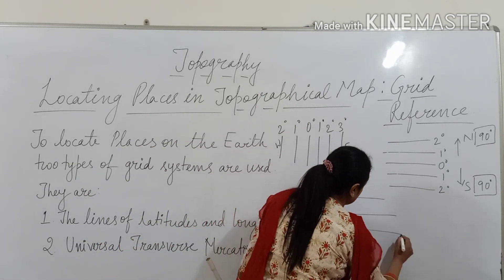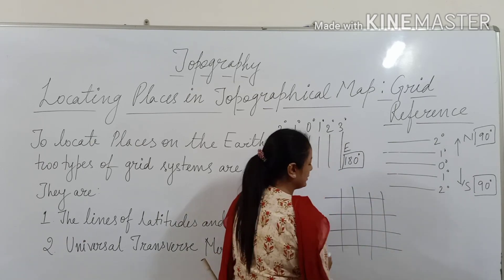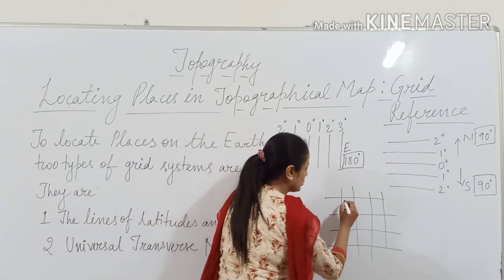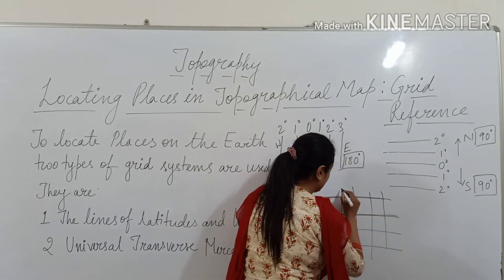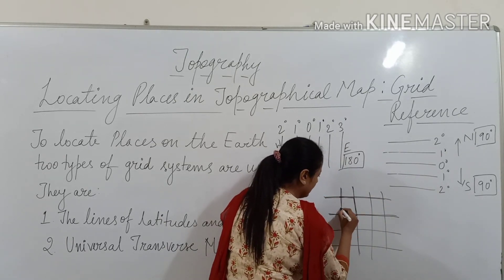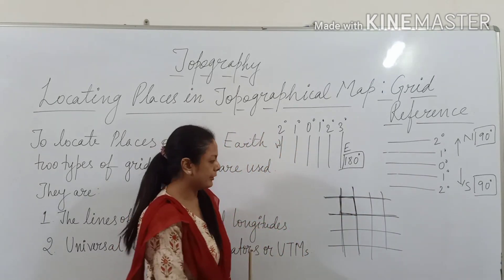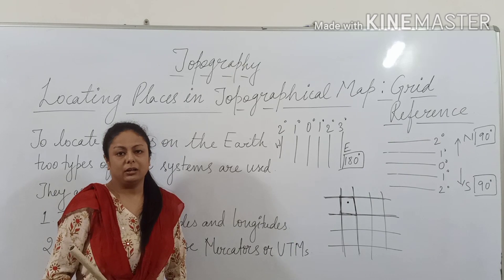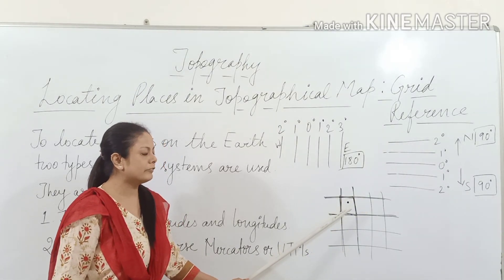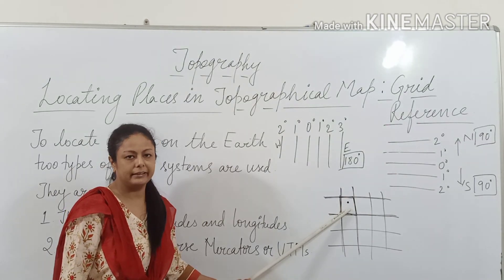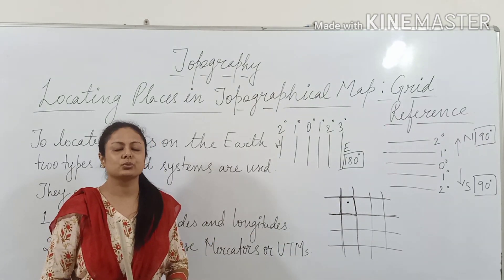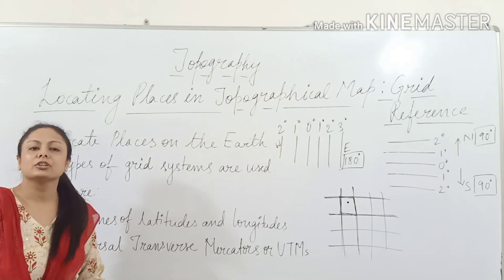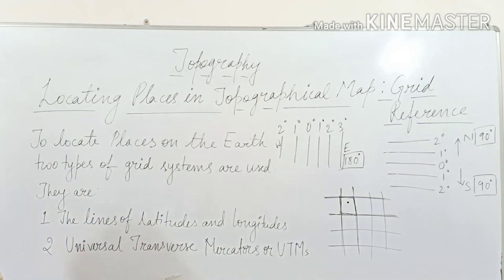If we draw lines of latitudes and longitudes, when they form a network you can see they create many boxes. Where 2 latitudes and 2 longitudes are passing, that forms one grid. So if we have to locate a place, we will find its location in that particular grid. This is how the grid system helps us locate any place on the earth's surface. The second system is Universal Transverse Mercators — UTMs — which we will discuss in more detail.